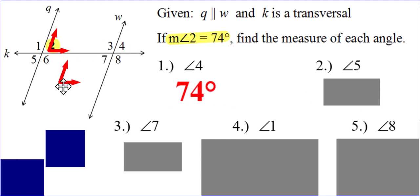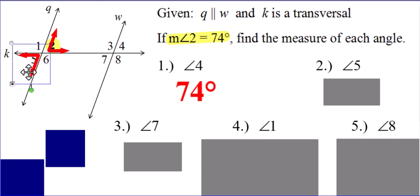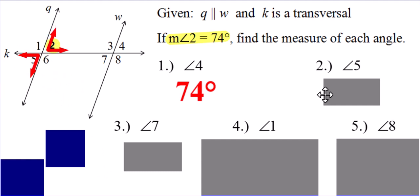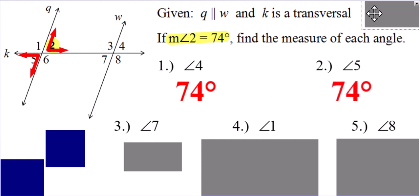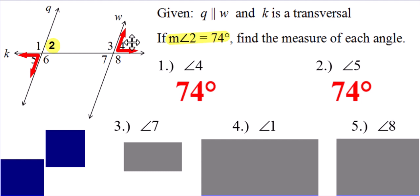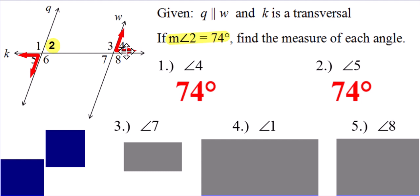What about angle five? Angles two and five are opposite angles of each other — that's what we call vertical angles — which means angle five is also 74 degrees. Now, that's not the only way you could have figured it out. Angles four and five are congruent because they're a pair of alternate exterior angles. So often there's more than one way of figuring out an answer. Most kids probably thought of vertical angles, but I wonder if a few kids thought of alternate exterior angles to prove that angle five is 74 degrees.